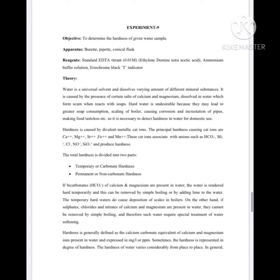Permanent hardness is caused by the sulfates, chlorides, and nitrates of calcium and magnesium. Temporary hardness can be removed by a simple process like boiling, while permanent hardness cannot be removed by a simple process and needs special methods to remove, which you will be studying further in the water treatment topic.